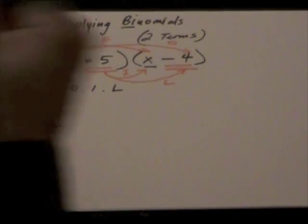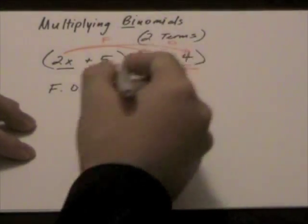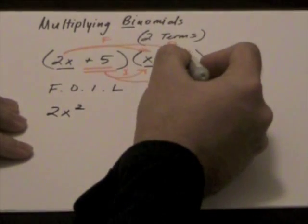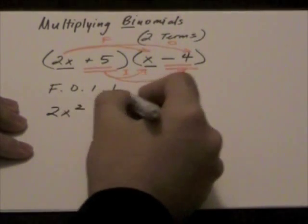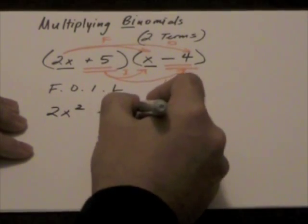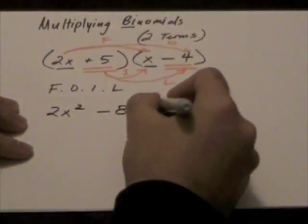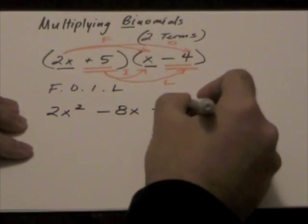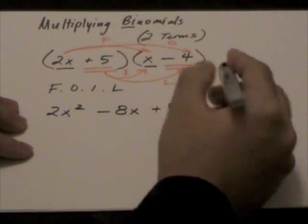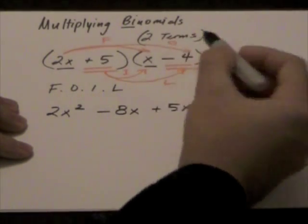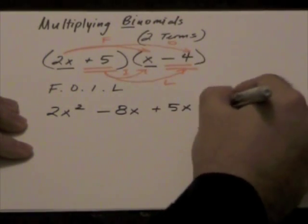So, let's expand that. 2x multiplied by x will give us 2x squared. 2x multiplied by negative 4 will give me negative 8x. Positive 5 multiplied by x will give me a positive 5x. And lastly, positive 5 multiplied by negative 4 gives me negative 20.